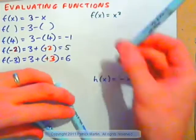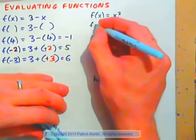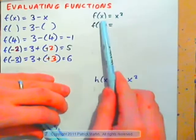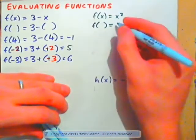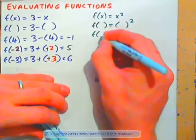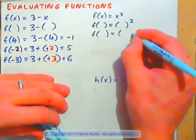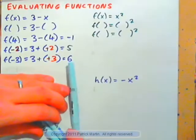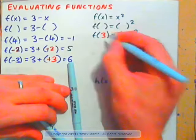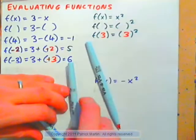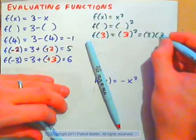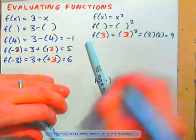f of x equals x squared. f of parentheses would be parentheses squared. So, f of 3 would be 3 all squared, and 3 all squared is 3 times 3, which is 9.